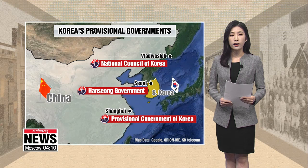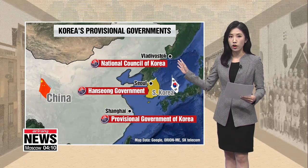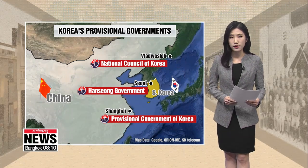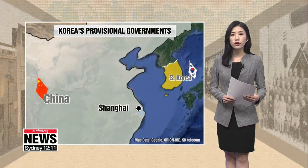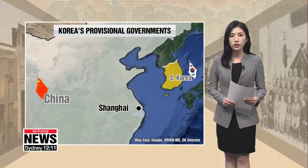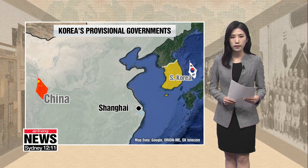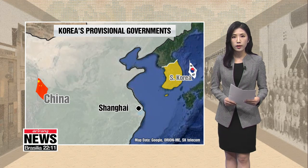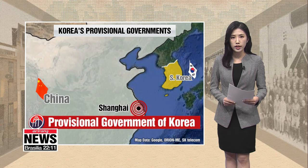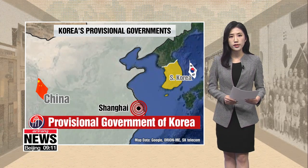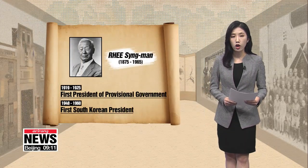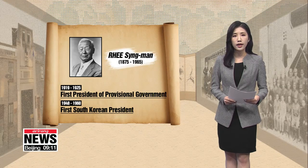The National Council of Korea, based in the Russian city of Vladivostok; the Hanseong government, based in Seoul; and the government in Shanghai. The provisional governments in Korea and Russia were under close scrutiny from Japan, limiting their activity. That prompted the decision in September 1919 to join the three main provisional governments together, here in Shanghai, under the first elected president, Lee Seung-man, an ardent nationalist who tried to gain international support for Korea's independence.